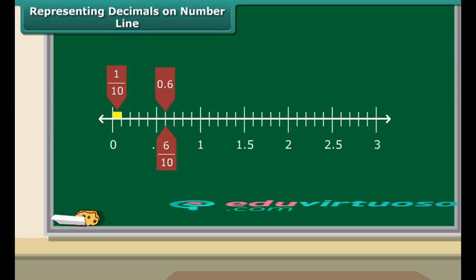Similarly, we can represent 2.7 by counting 2 ones and 7 one-tenths.